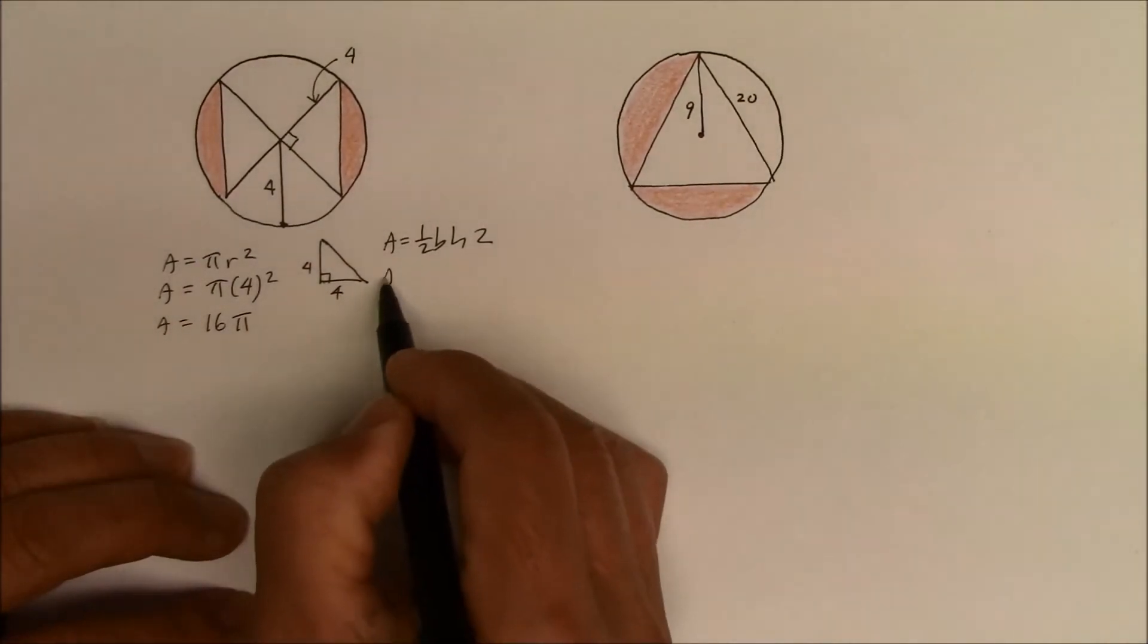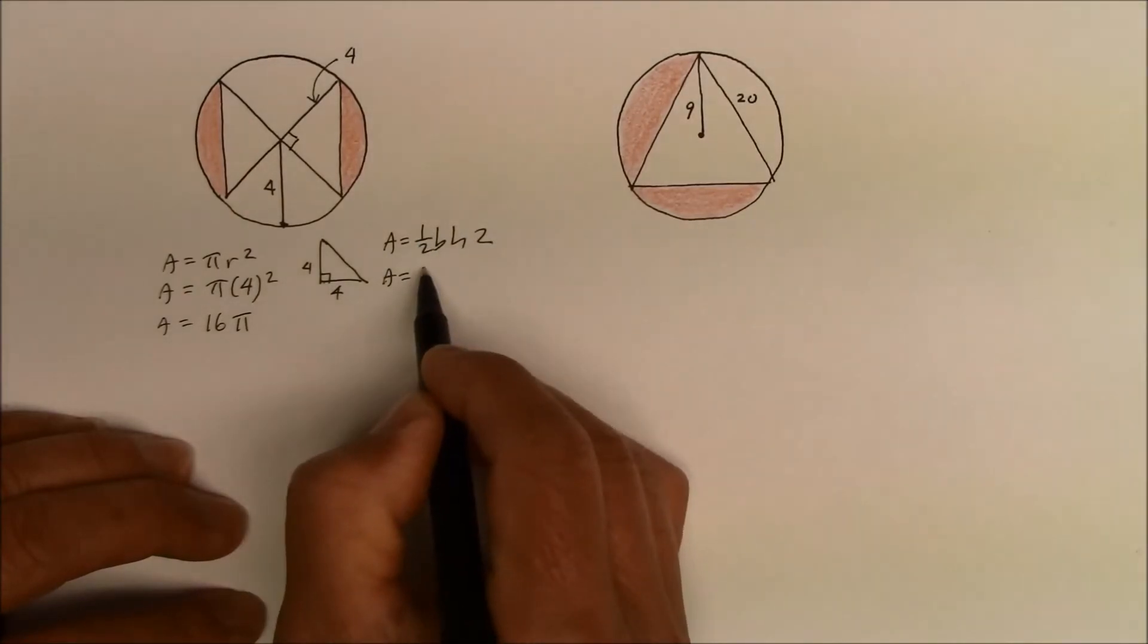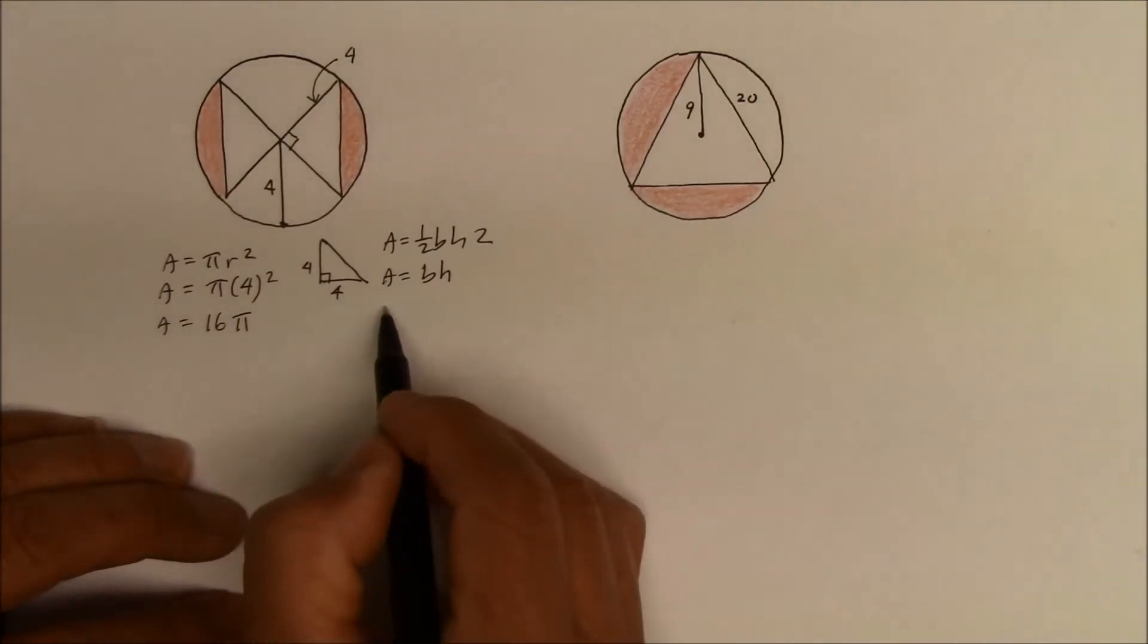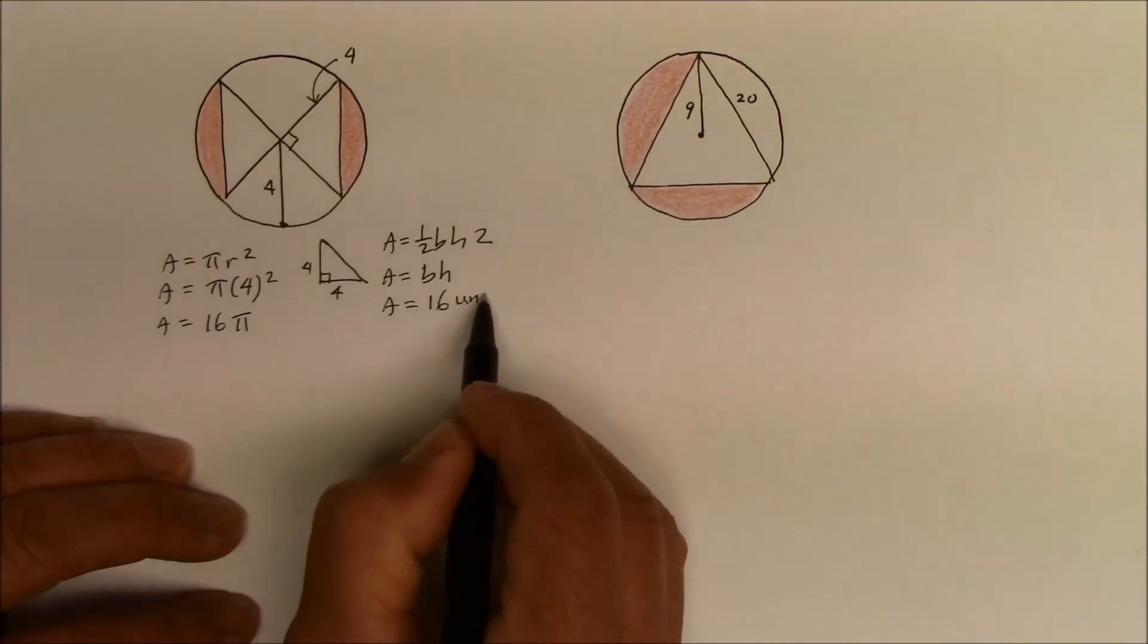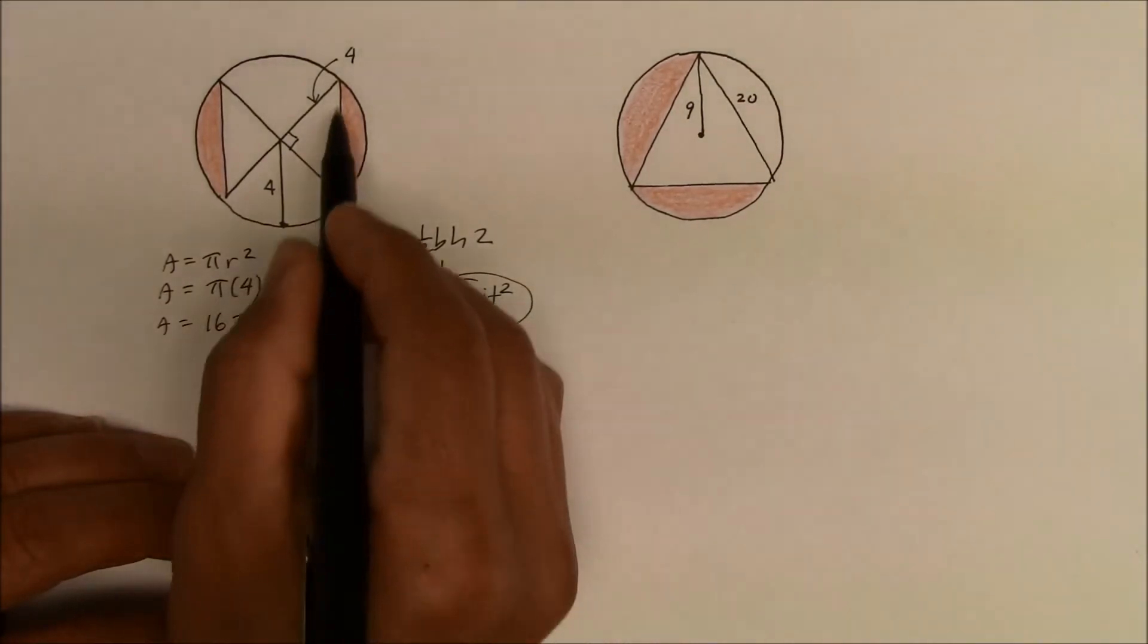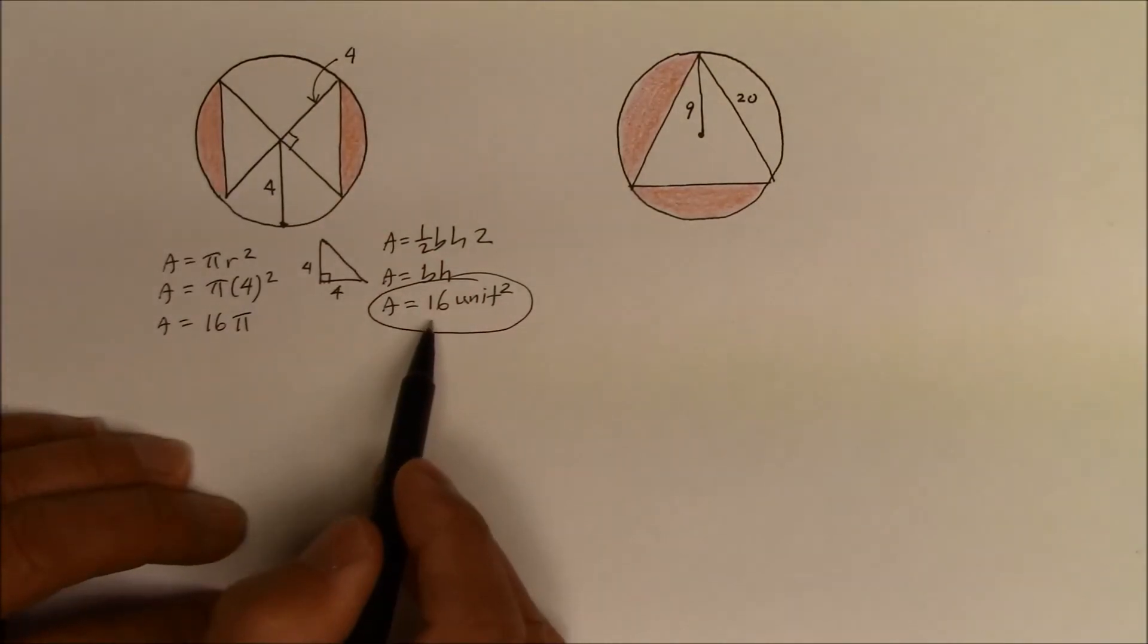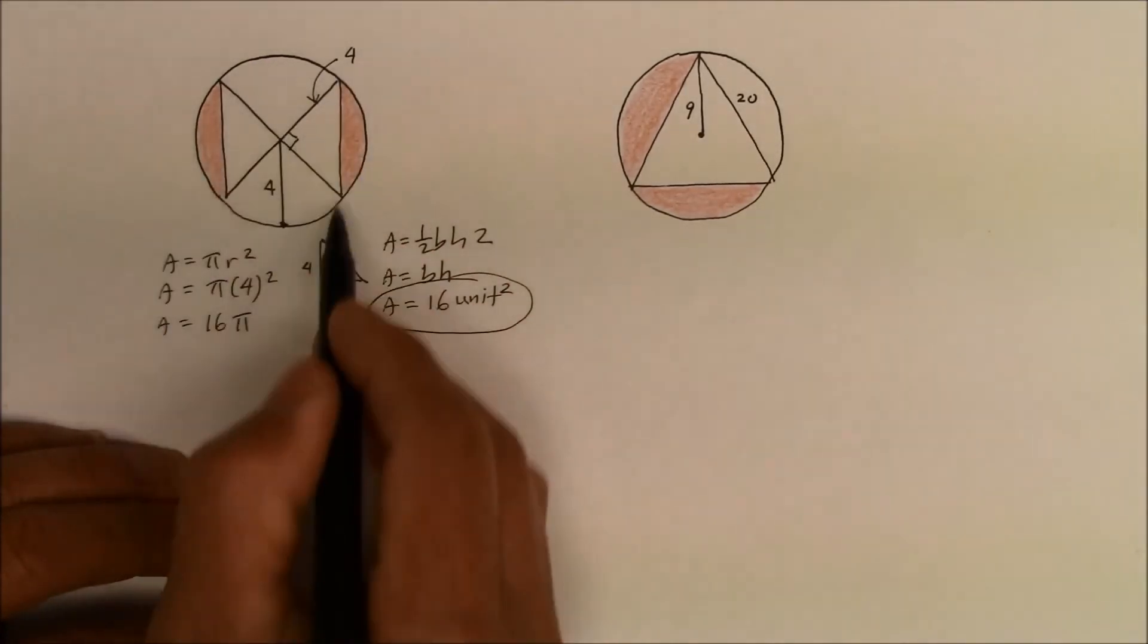So we could simplify that formula by saying half of the 2 is 1. So area is just simply base times height. So it is going to be simply 16 units squared. So that was easy. Finding the area of the two triangles is 16 units squared. Finding the area of a circle was 16π.